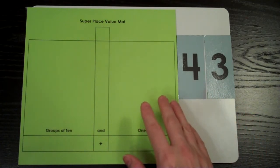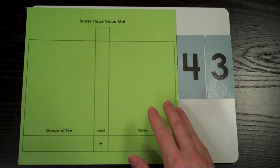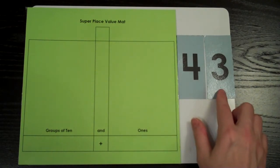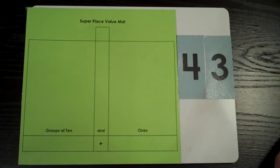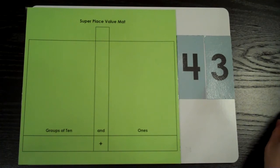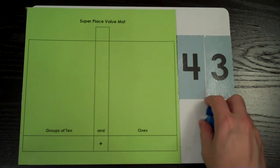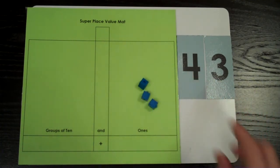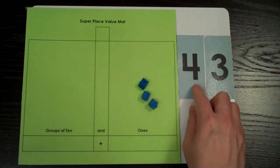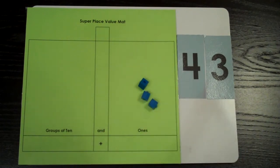Let's make it on the place value mat using base 10 materials. I need 3 in the ones place. I'm going to take 3 base 10 blocks and put them here. It has a 4 in the tens place. That means I need 4 tens rods in the tens place.